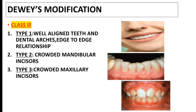In Davis modification, Class 3 is further divided into three types. Type 1 is well-aligned teeth and dental arches with an edge-to-edge relationship, shown in the first picture. Type 2 is crowded maxillary incisors, shown in the second picture. Type 3 is crowded mandibular incisors, shown in the third picture.